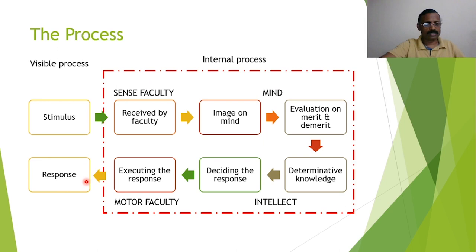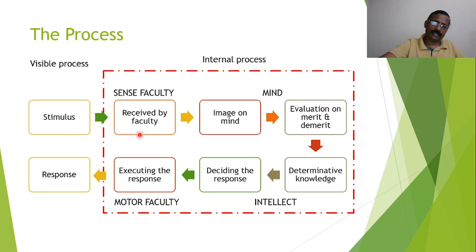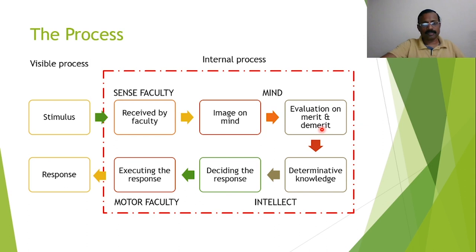Even though 100 persons receive the same stimulus, the responses can be 100 different ways. Why this difference happens is according to the internal process. There is a long process inside: the stimulus received is sensed by the faculty, an image forms on the mind, and there will be an evaluation of merits and demerits — as described in Charaka Samhita.